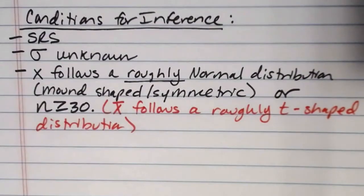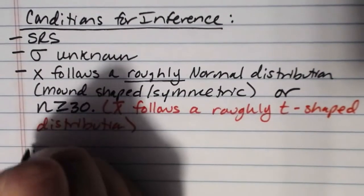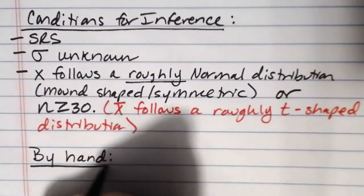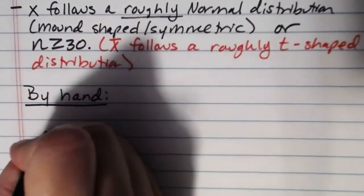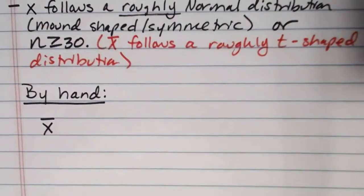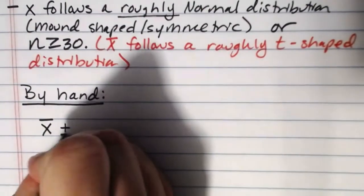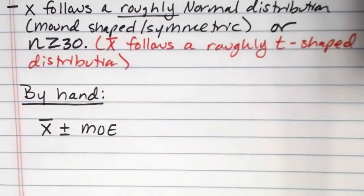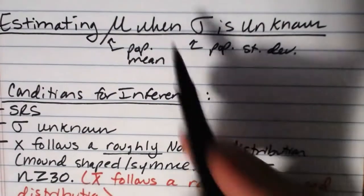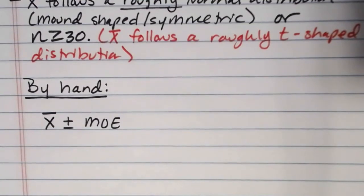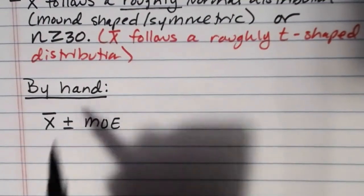Now if we were going to do this by hand the process is essentially exactly the same as the process was for calculating a confidence interval for mu when we knew sigma. But the formula changes a little bit. We still start with x bar as our best guess or our best estimate of the population mean. And we still add and subtract our margin of error. But when we don't know sigma our margin of error calculations are different because our margin of error calculations before we had z sub c times sigma over the square root of n and obviously if we don't know sigma this has got to change a little bit.